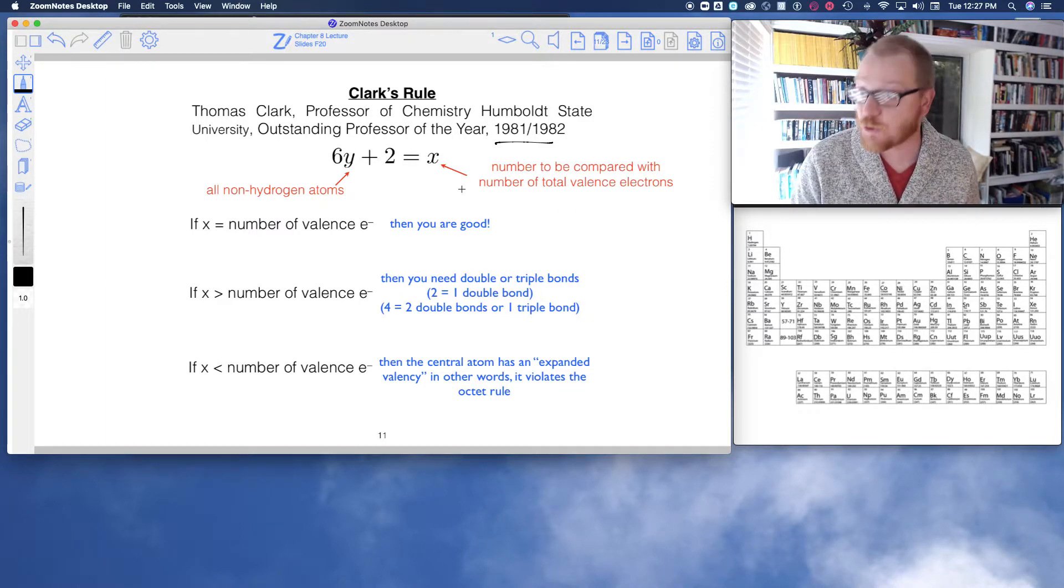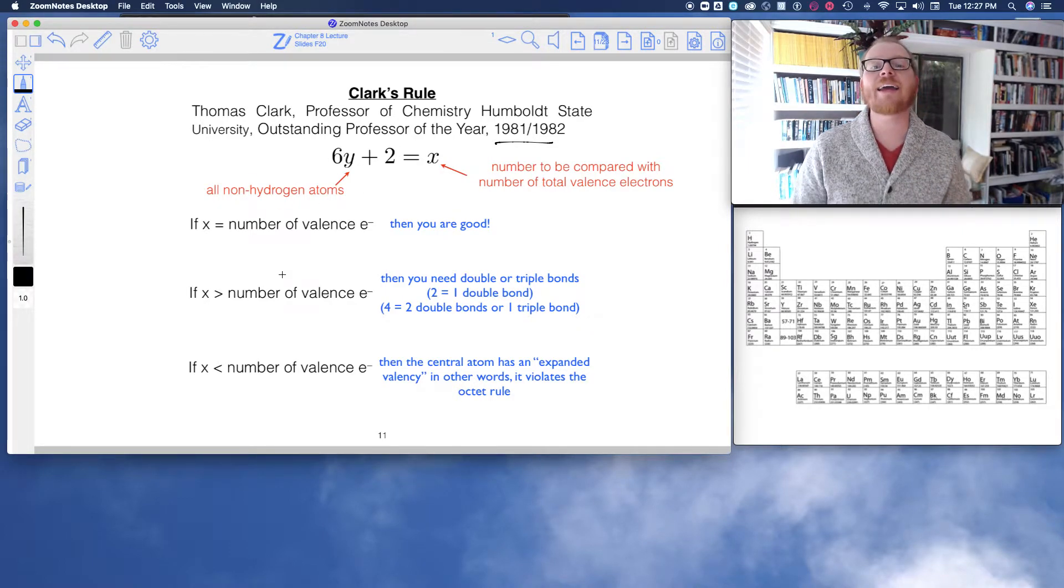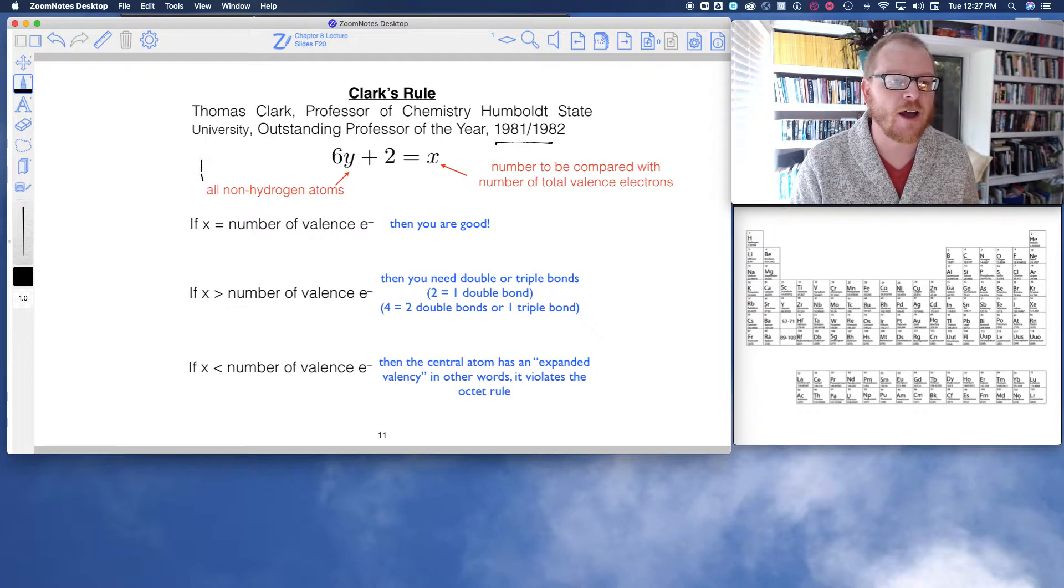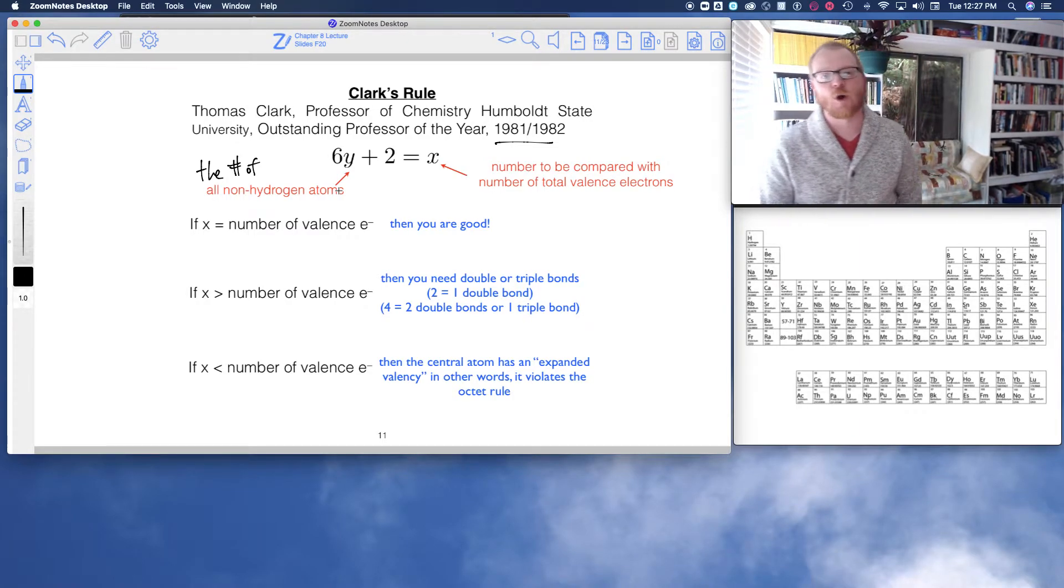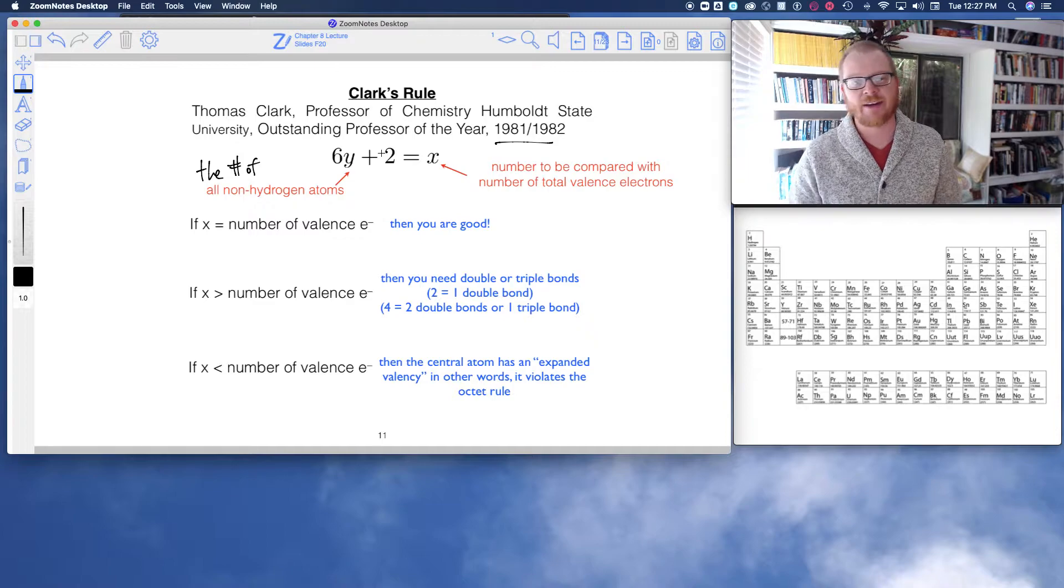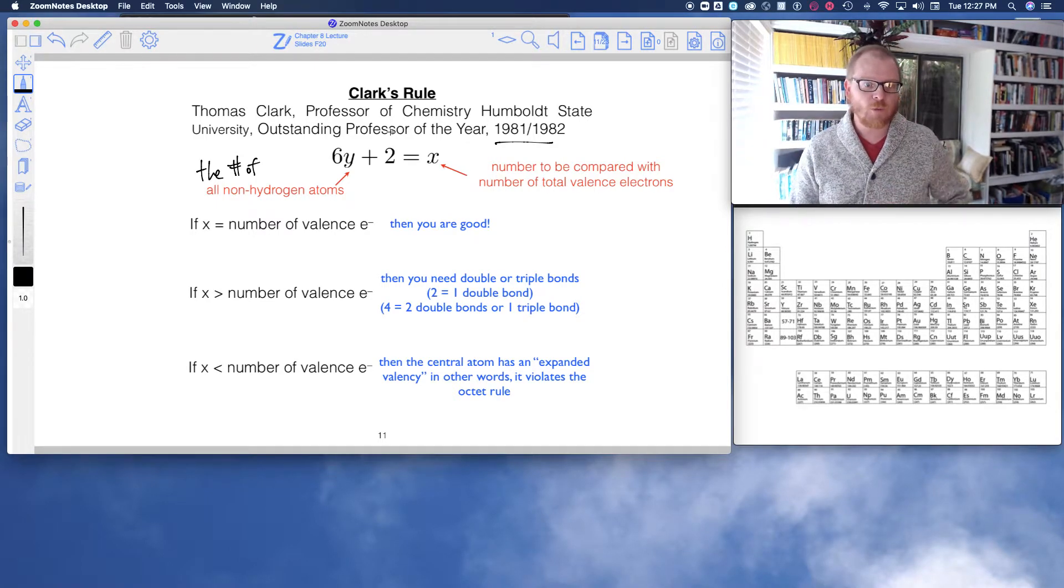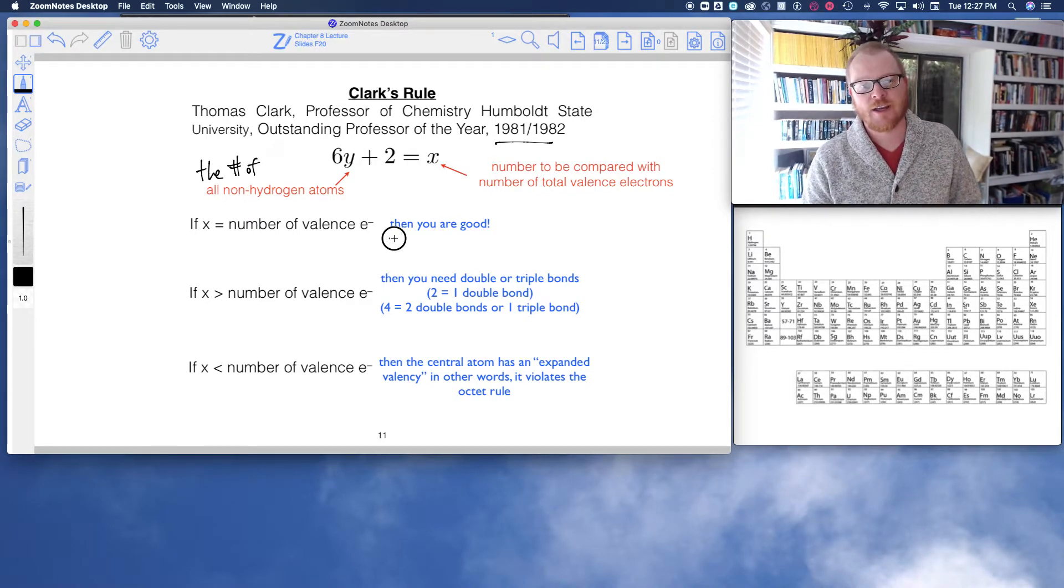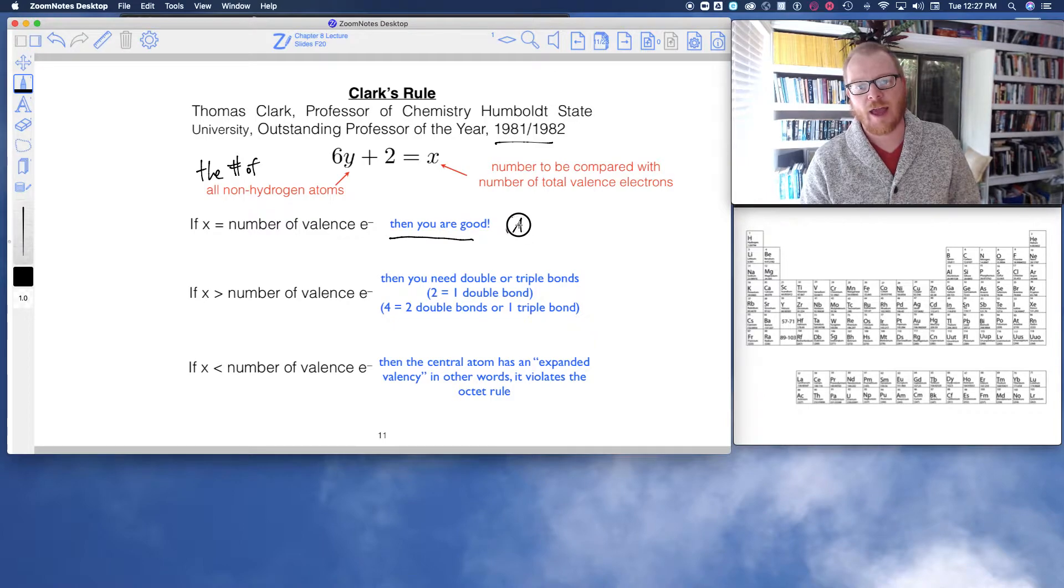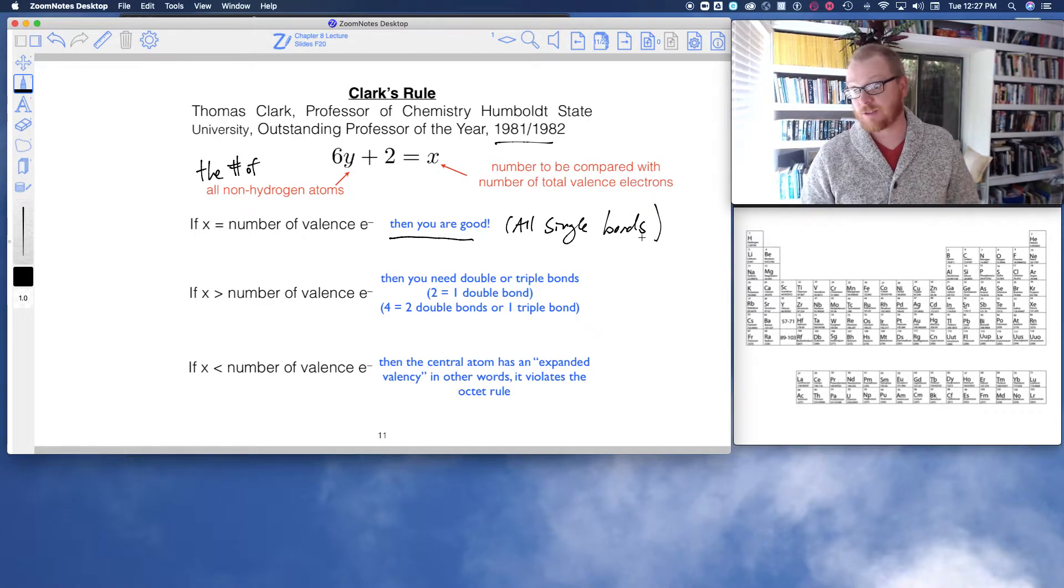So if we do this calculation, 6y plus 2, where y is the number of all non-hydrogen atoms. So if it's 1, it becomes 6 times 1 plus 2 equals 8. If there's 2 of them, it becomes 6 times 2 plus 12 equals 14, and so on. If this number x that we get from this equation equals the number of valence electrons, then we're good to go, and it's all single bonds.